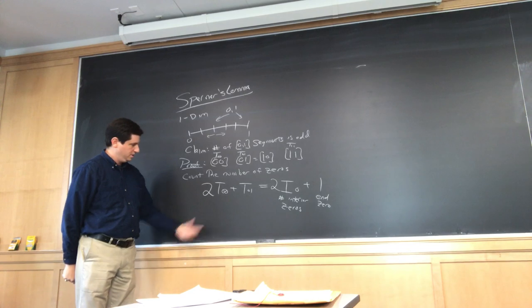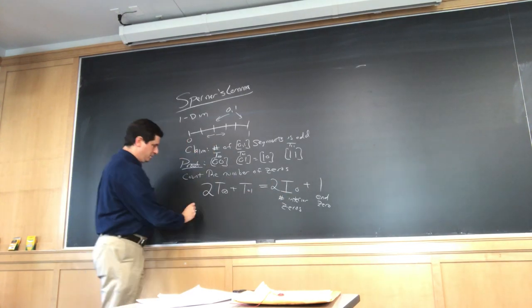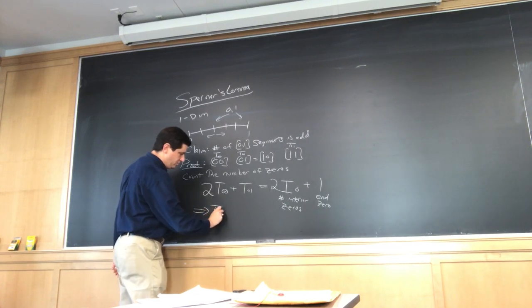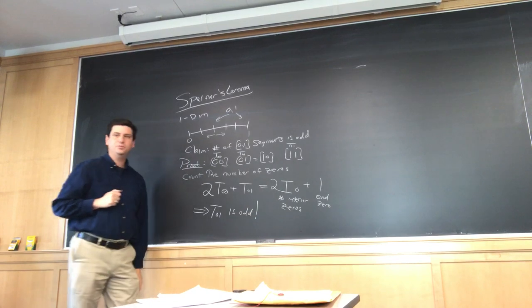So this is another way to look at the calculation. If I do 2 times the number of 0,0 segments plus the number of 0,1 segments, that counts the number of 0s, but it counts all the interior 0s twice. It's counted the interior 0s twice, and then I have the extra 1 at the end. And, well, even number, even number, odd number, therefore T_0,1 is odd. Therefore, T_0,1 is odd. And that's the proof.